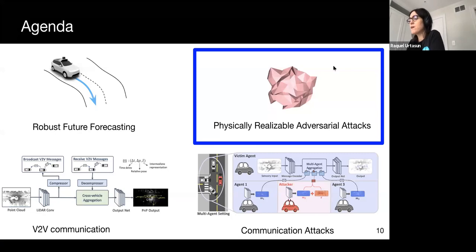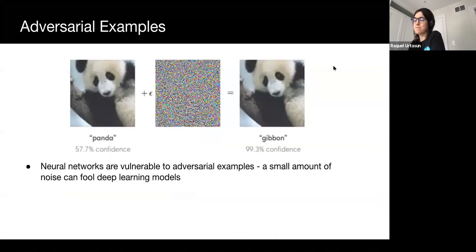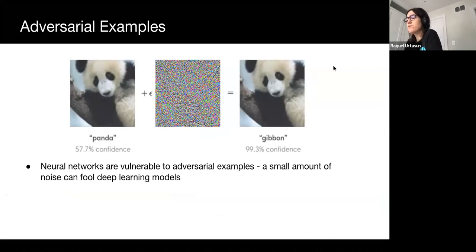Now that we know how self-driving cars work, let's talk about adversarial attacks in this domain. Deep neural networks are widely used for computer vision. While they produce impressive results, they are vulnerable to adversarial attacks where imperceptible noise can create false predictions. This is a major concern for safety-critical applications such as self-driving.